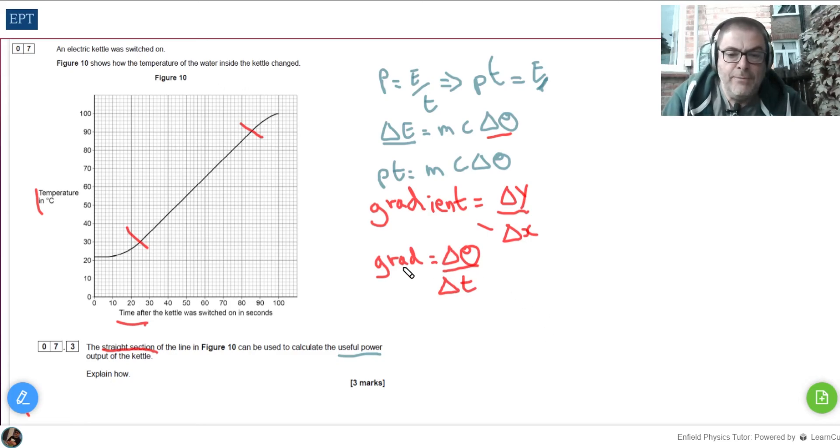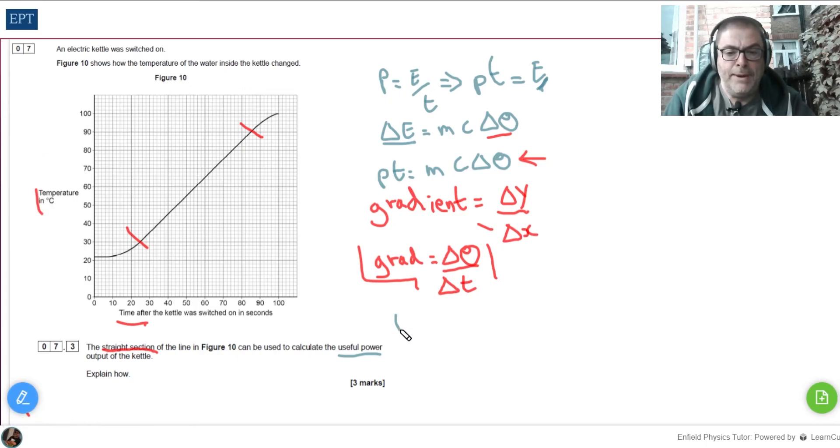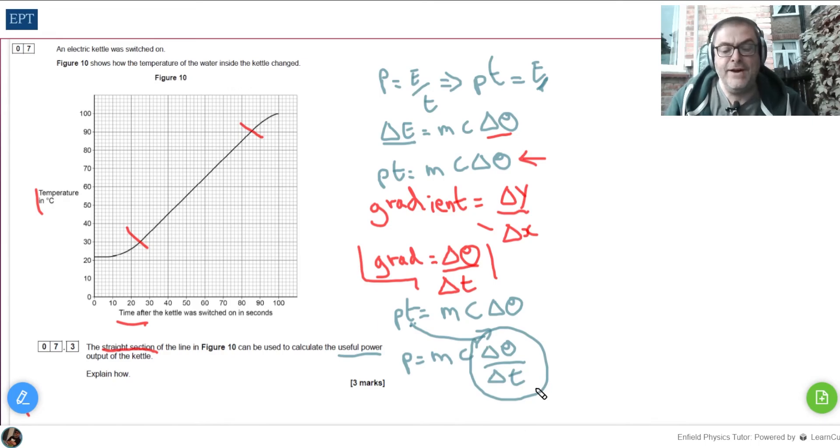Now can we find this gradient buried in this formula? Well, let's go back and rearrange the power times time formula. If we do that, we get power times time, let's bring this T over to the other side. Therefore, we can say that the power equals mcΔθ over T, and remember it's okay for us to write delta T. We now have the gradient buried in our formula. Therefore, we can say that the useful power of the kettle is equal to the mass of water times the specific heat capacity times the gradient. And that, physics fans, is the answer.